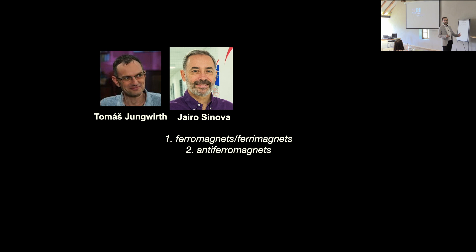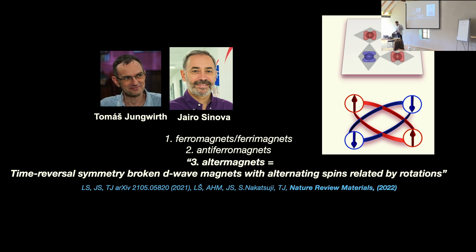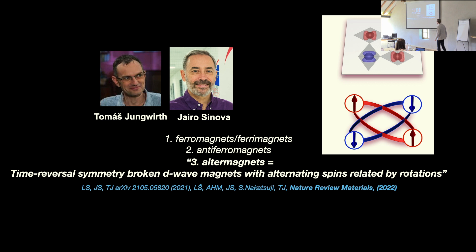Conventionally, when we think about collinear magnets, we think that we have either ferromagnets and ferrimagnets, or we have antiferromagnets. What I would like to show you today is that when we look at collinear magnets by symmetries, we actually have a third class. This third class is characterized in real space by anisotropic unconventional spin densities related by rotations, and in momentum space it has this D-wave-like anisotropy of the Fermi surfaces, where alternating spin channels are connected by rotations. Such a band structure also breaks time-reversal symmetry.